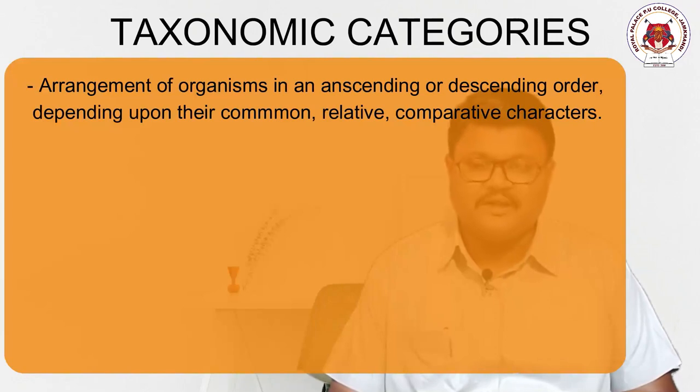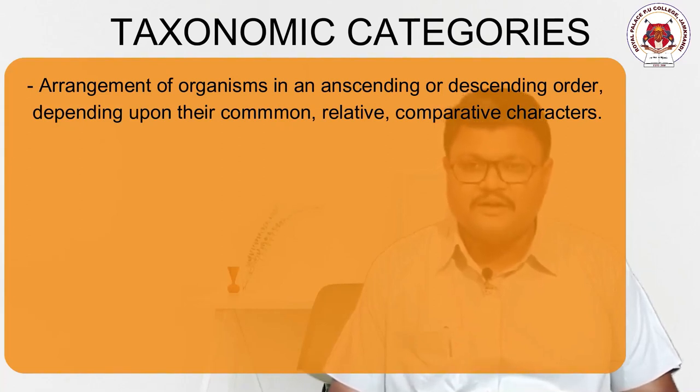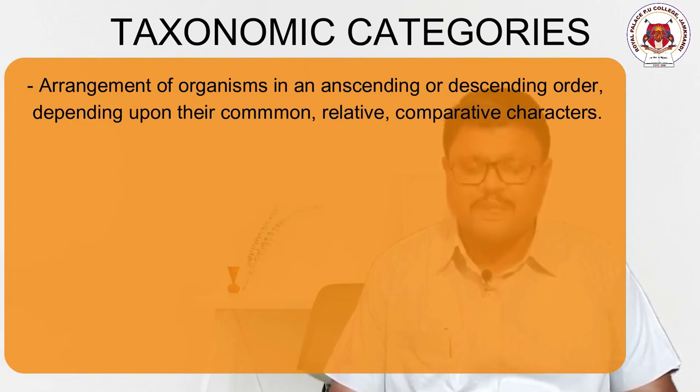Without basic morphological and anatomical characteristics and without classification, scientists decided to organize organisms in a specific order. This topic is called taxonomical categories, which is nothing but categorizing and classifying organisms depending upon their basic characteristics. Here, organisms are divided into different ranks, groups, and classes — in general they are divided into a taxon or taxa.